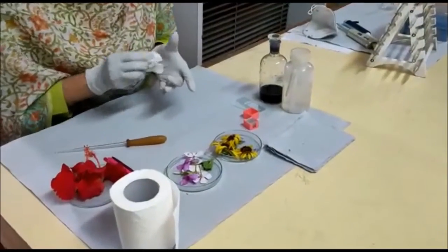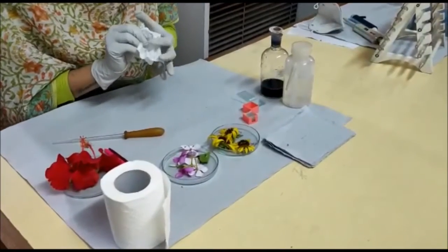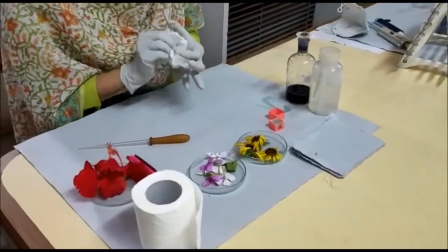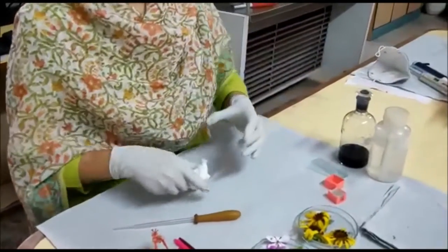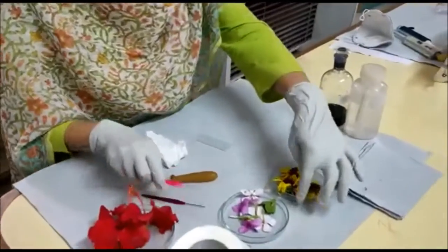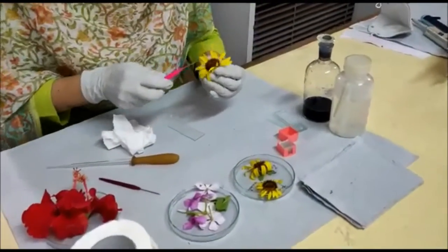Let us perform this experiment of testing cell viability of pollen grains. First, clean your slide properly with a tissue paper, and then take any flower like this sunflower which has plenty of pollen grains.